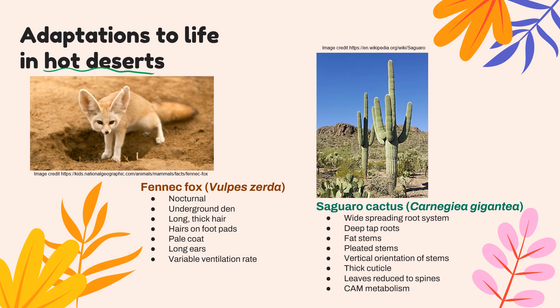The hot desert biome poses challenges to organisms because it's both hot and dry. The fennec fox uses the hot desert as its habitat. It is nocturnal, avoiding the hottest parts of the day, and uses an underground den to escape the day's heat. Its long, thick hair insulates it from both daytime heat and nighttime cold. Hairs on the footpads insulate against hot sand. Its pale coat reflects heat. Long ears allow cooling as blood flows through them, leveraging the high latent heat of water in blood. A variable ventilation rate — panting — also aids cooling.